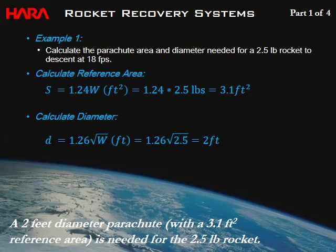Example 1: Calculate the parachute area and diameter needed for a 2.5-pound rocket to descend at 18 ft/s. Plugging 2.5 pounds into the simplified equation: S = 1.24 × 2.5 = 3.1 ft². For diameter: D = 1.26 × √2.5 ≈ 2 feet. So we need a 2-foot diameter parachute for this 2.5-pound rocket.